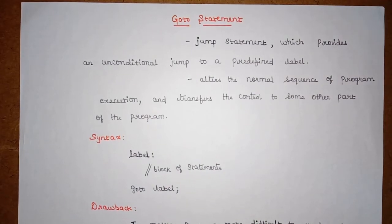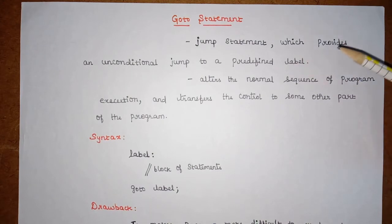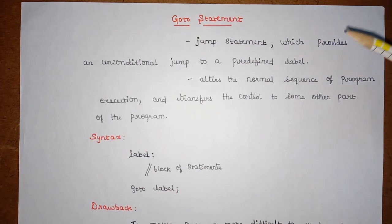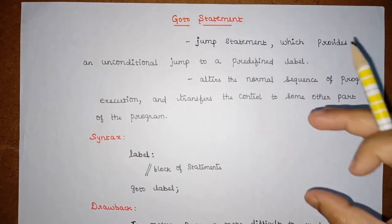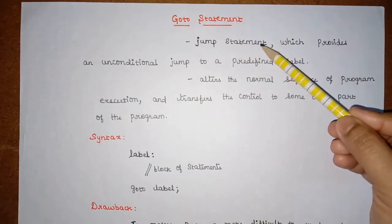Welcome back to the class. The discussion is about the goto statement. In the previous video we discussed about switch case statements, and here it is the goto statement. This goto statement is also called a jump statement because it provides an unconditional jump to a predefined label. When we use this goto statement, we can skip some part of the program and directly move to another part of the program.